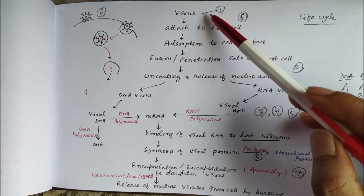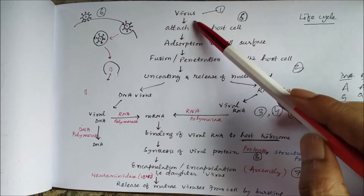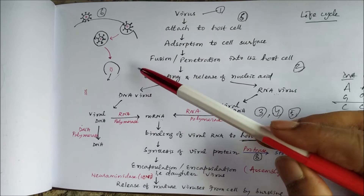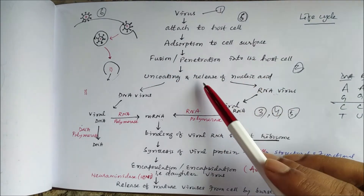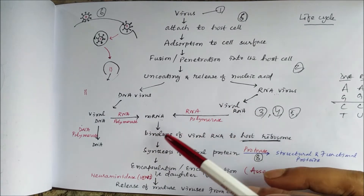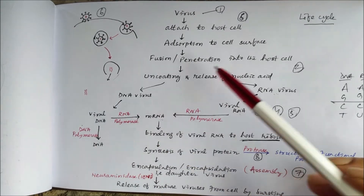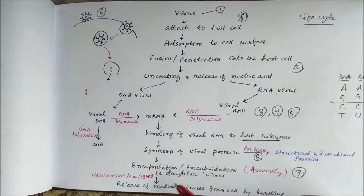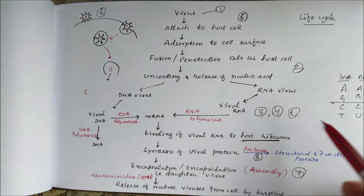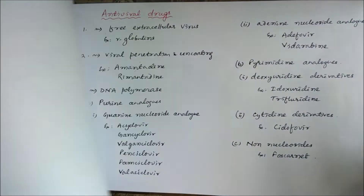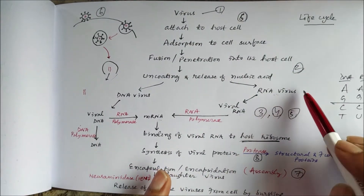We can directly kill extracellular virus, inhibit attachment and adsorption, block penetration and uncoating, inhibit nucleic acid synthesis by targeting DNA polymerase or RNA polymerase, inhibit protease, block assembly, or inhibit neuraminidase. These are all viable drug targets. For retrovirus, we will discuss targets separately.